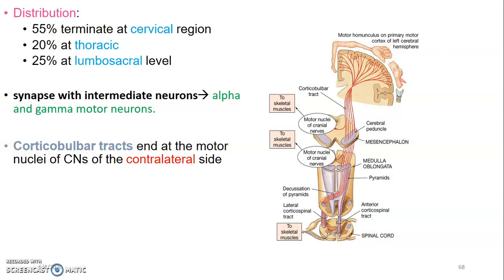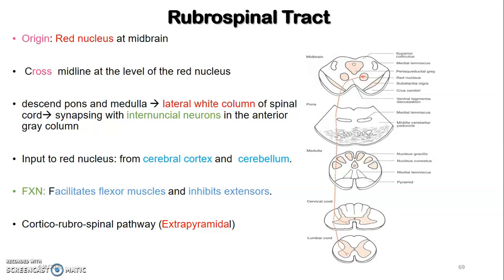The rubrospinal tract runs from the red nucleus to the spinal cord. The red nucleus is in the midbrain at the level of the superior colliculus. Fibers cross the midline at the level of the red nucleus, then descend through the pons and medulla, pass through the lateral white column of the spinal cord, and synapse with interneurons in the anterior gray column. Input to the red nucleus comes from the cerebral cortex and cerebellum. The rubrospinal tract facilitates flexor muscles and inhibits extensors; the corticorubrospinal pathway is extrapyramidal.